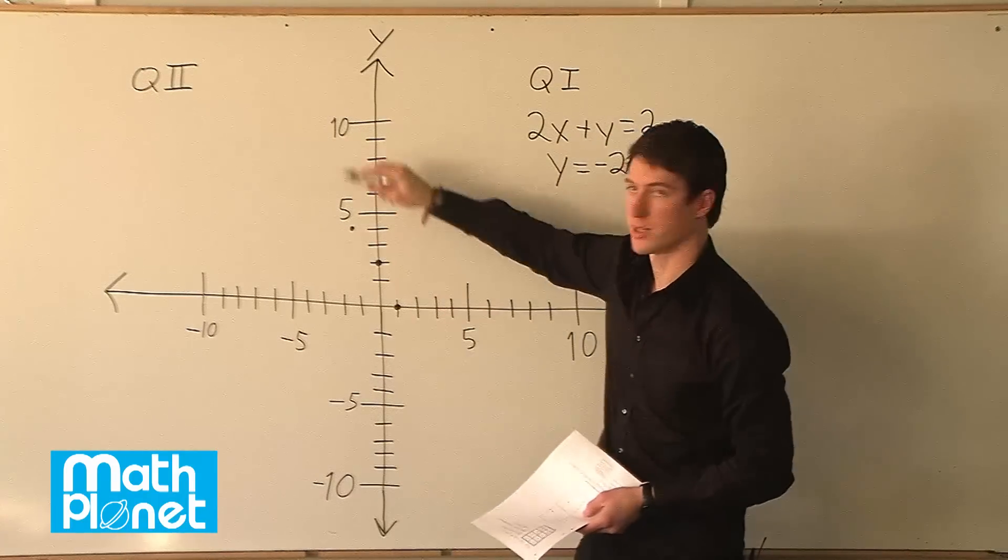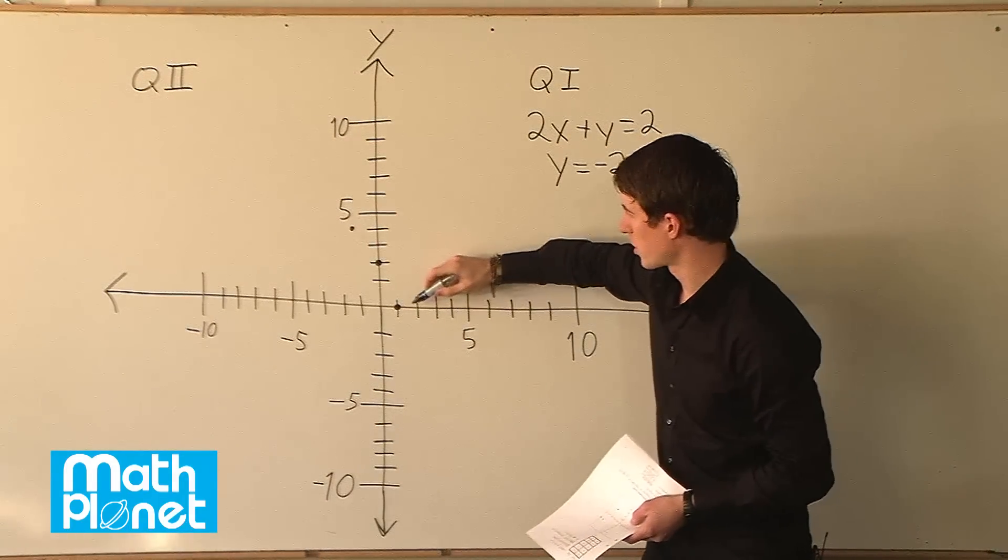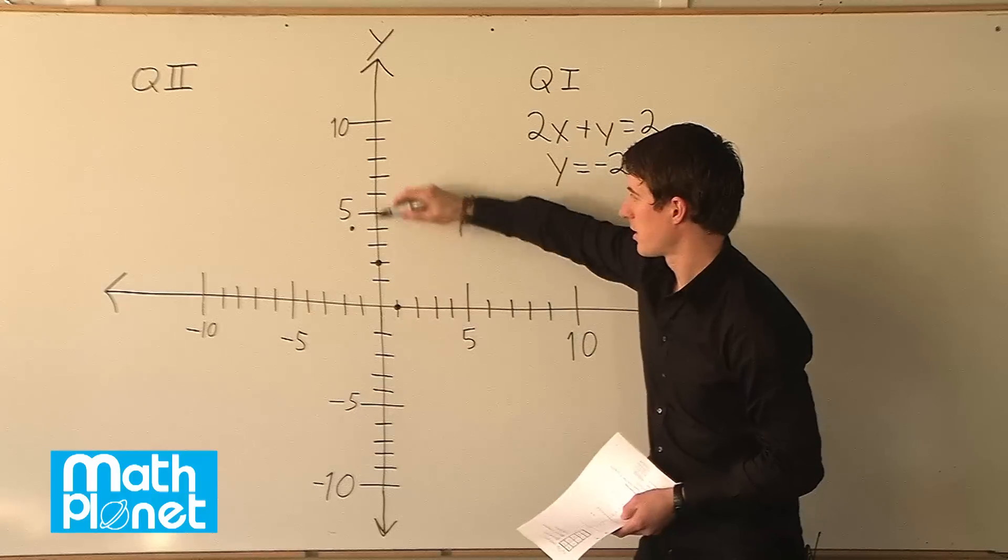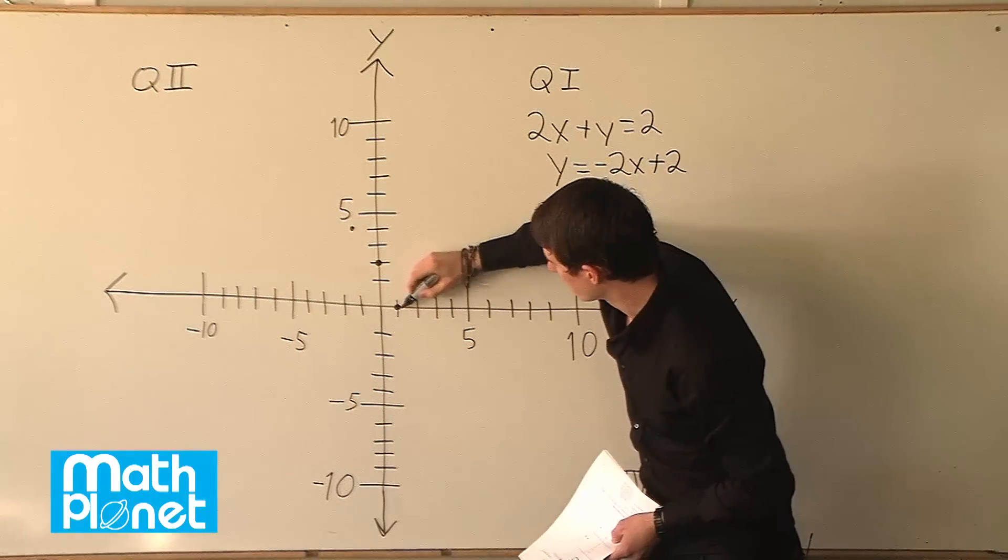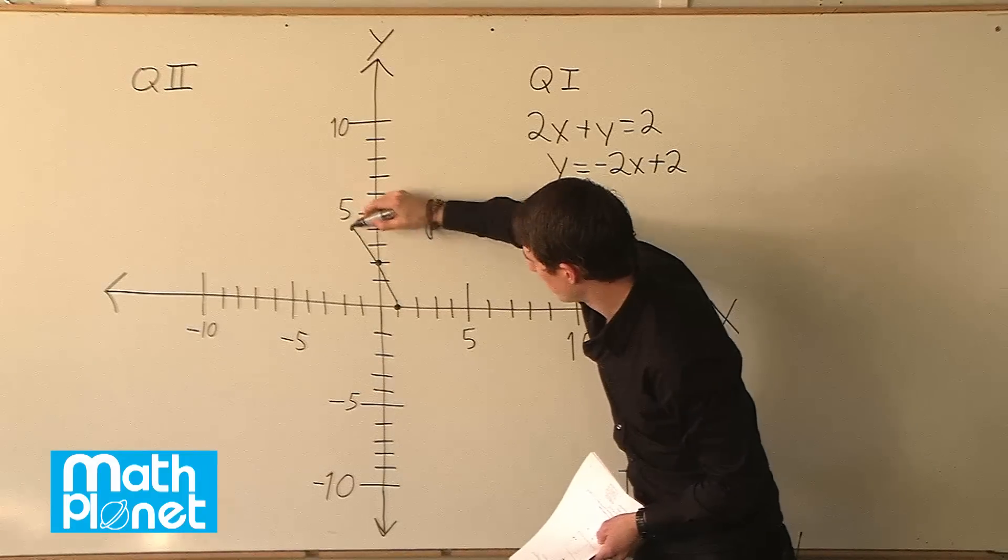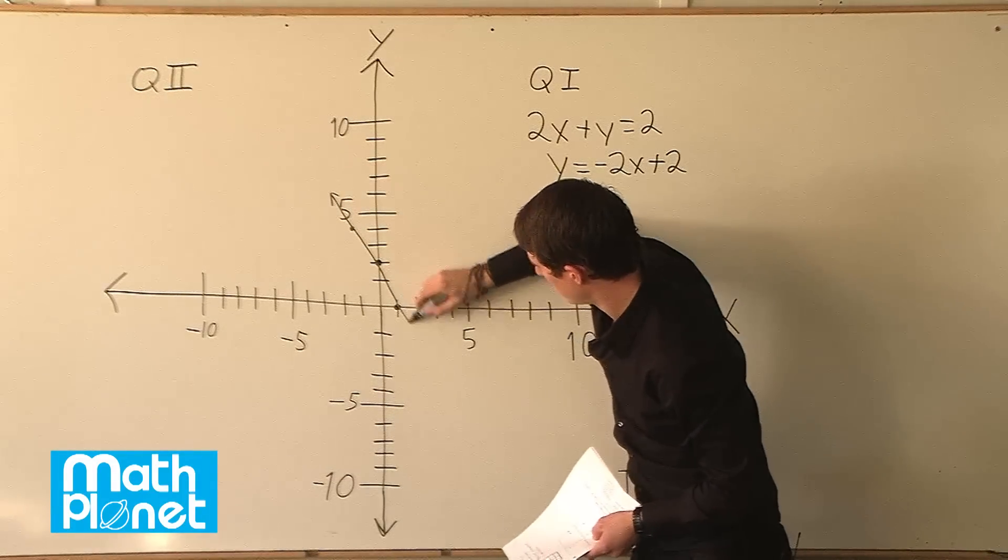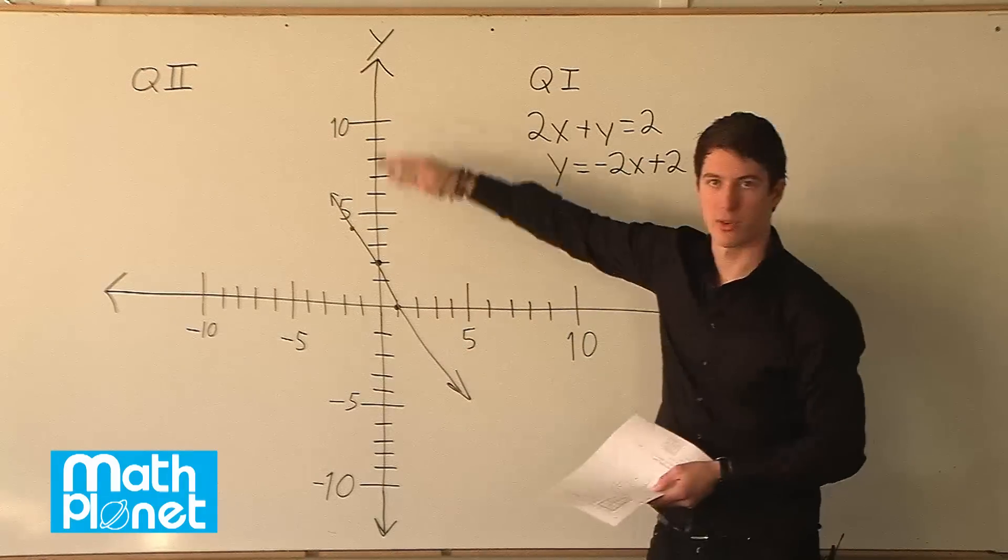So you can see this pattern will continue indefinitely. So we can just draw a line connecting these and it will go off and on for infinity. So we can say we have a line roughly like this and it goes forever in both directions.